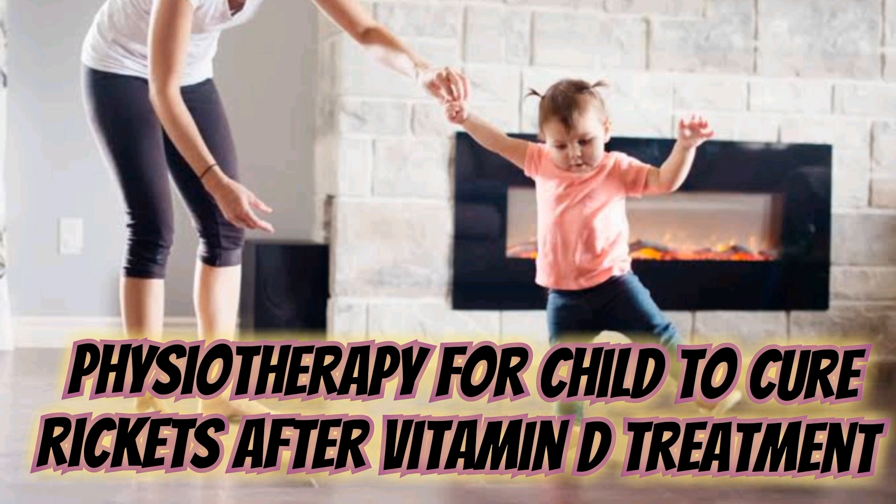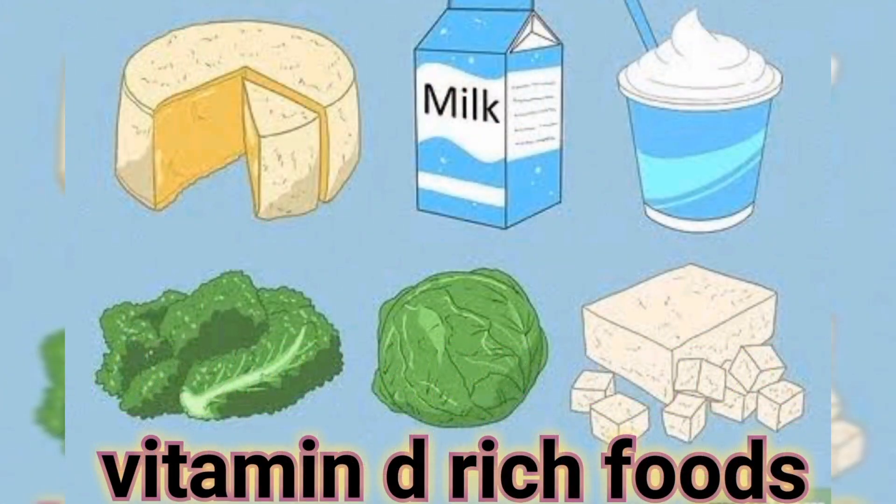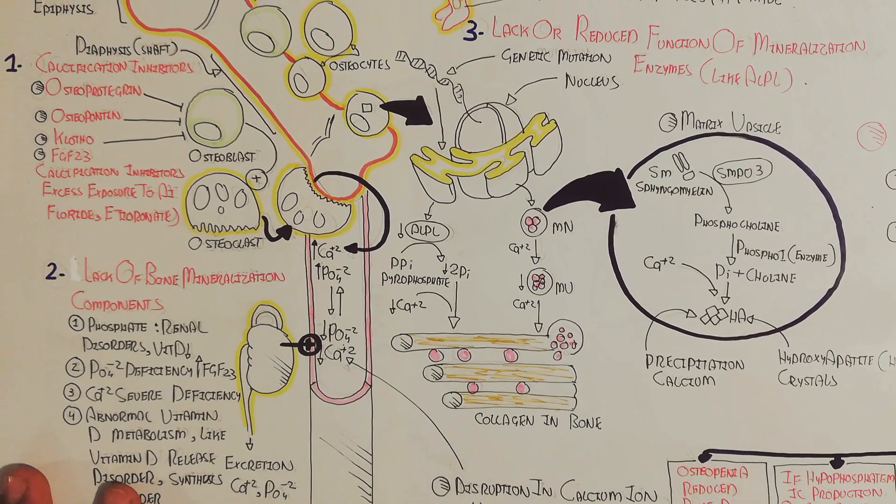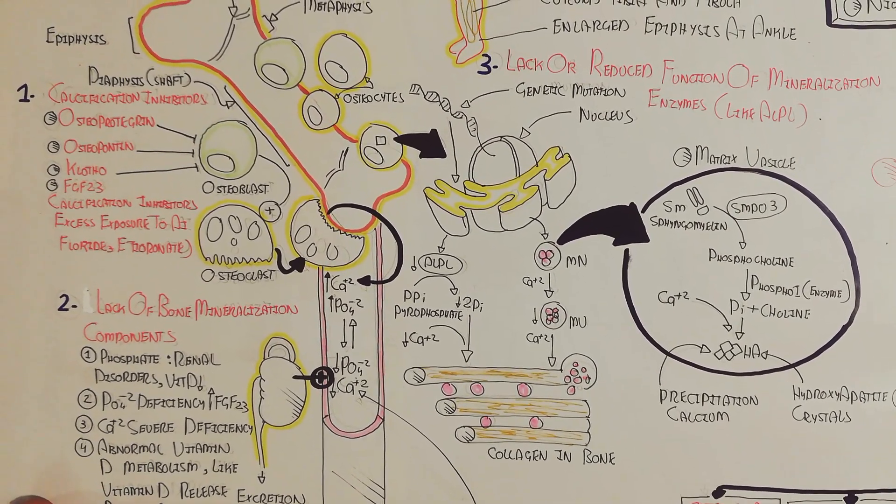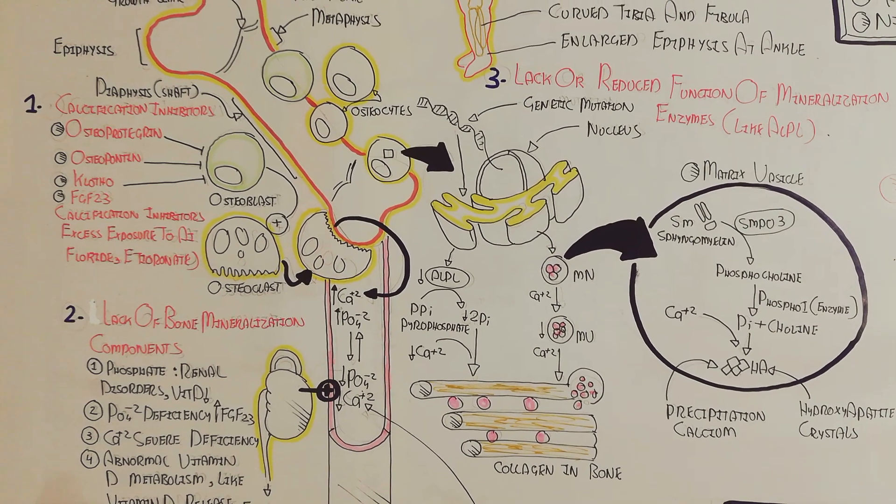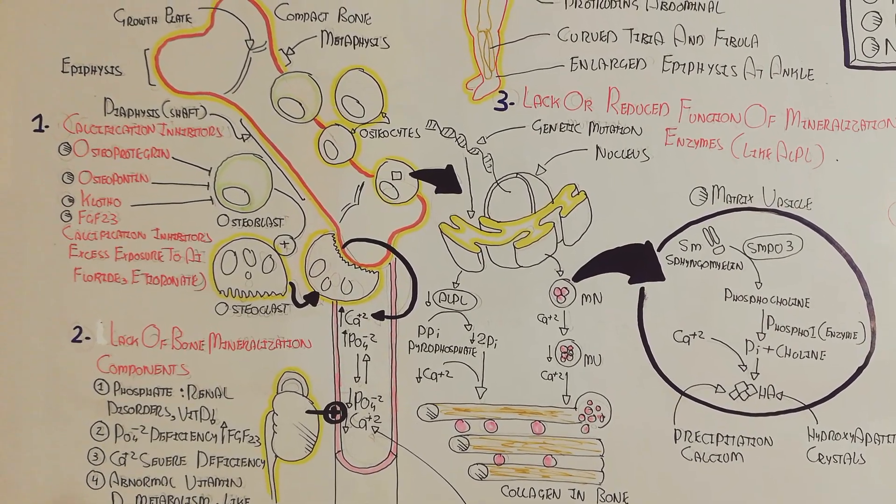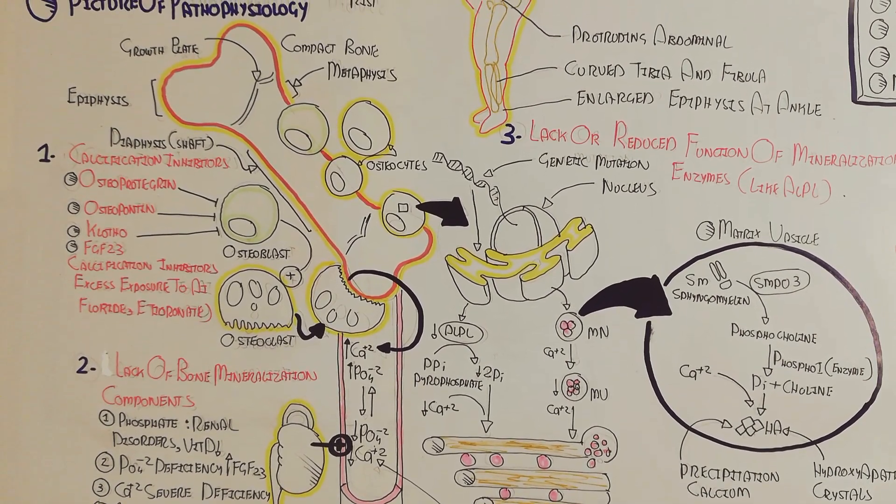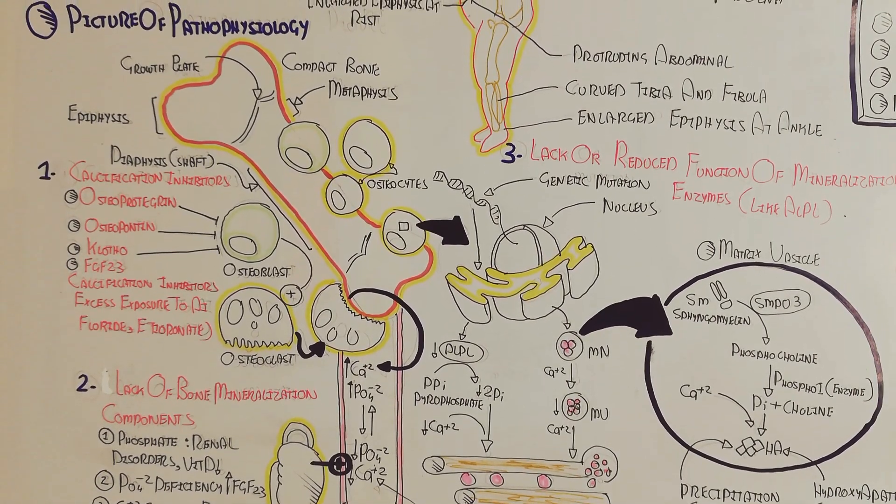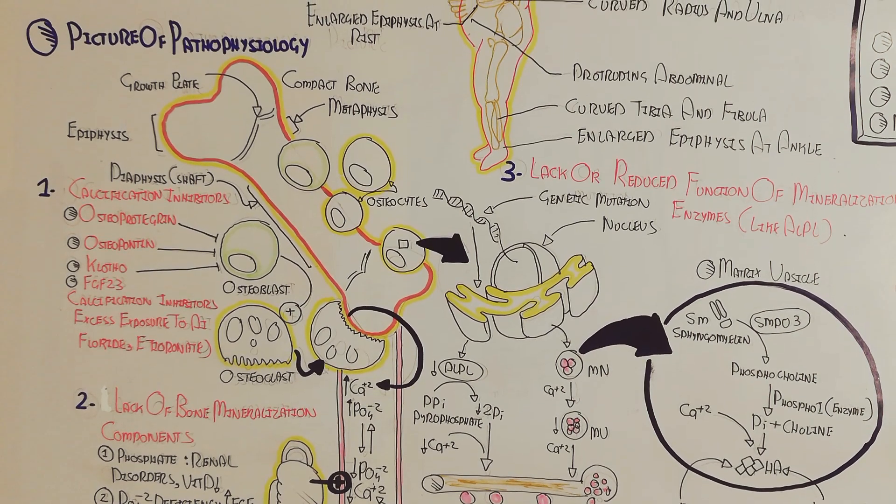Here you can see the physiology for a child to cure the rickets after vitamin D treatment, with vitamin D rich food like yogurt, milk, and cabbage. So the gastrointestinal tract and the kidney will not reabsorb too much calcium and phosphate, which will lead to deficiency in the blood, leading to rickets and osteomalacia.